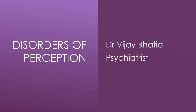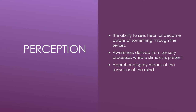What is perception? The dictionary meaning is the ability to see, hear, or become aware of something through your senses. This awareness is derived from sensory processes while a stimulus is present — that is, there is an outside stimulus present, and that is perceived through the sensory processes by the mind. You are apprehending by means of the senses, or sometimes even of the mind.